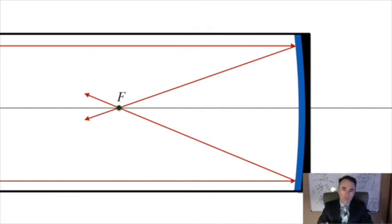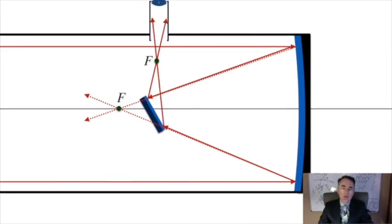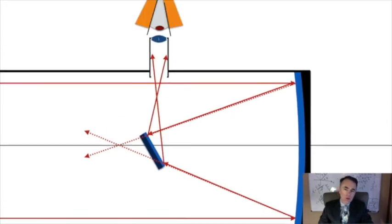But, before the focal plane, it uses a plane mirror to direct the rays to a lateral aperture, where it places the eyepiece. Of course, placing the plane mirror inside the tube blocks part of the collected light, which is the price to pay in these telescopes.